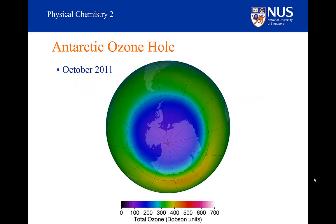You've probably heard of the Antarctic ozone hole. This is what it looked like in October 2011. The yellow and green values represent normal ozone amounts — around 300 or more Dobson units, which corresponds to a 3 mm thick layer if brought to Earth's surface. That thin layer is nonetheless sufficient to absorb all ultraviolet radiation from approximately 240 to 310 nm.